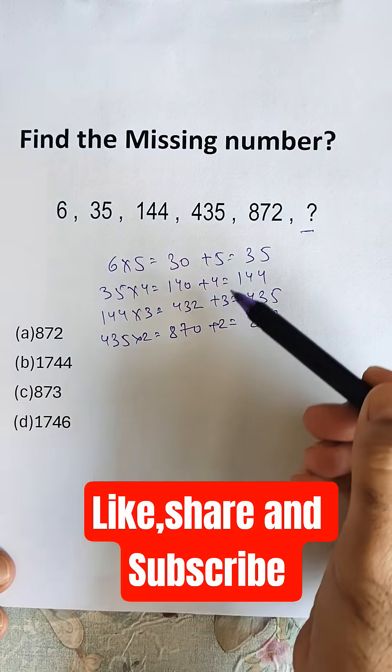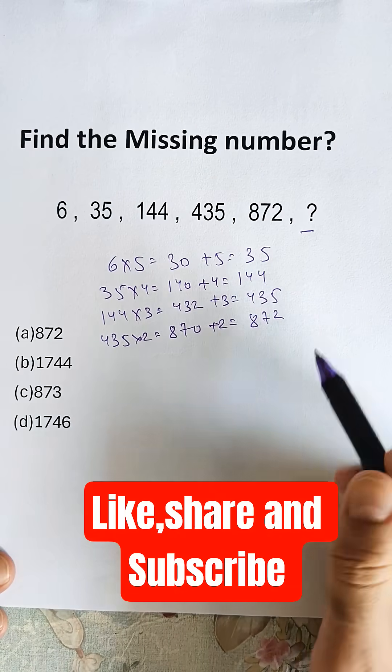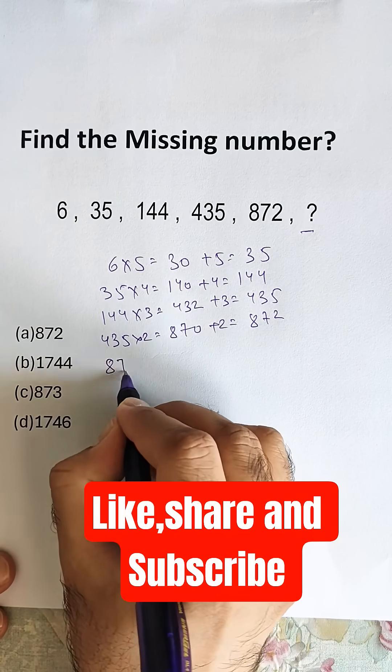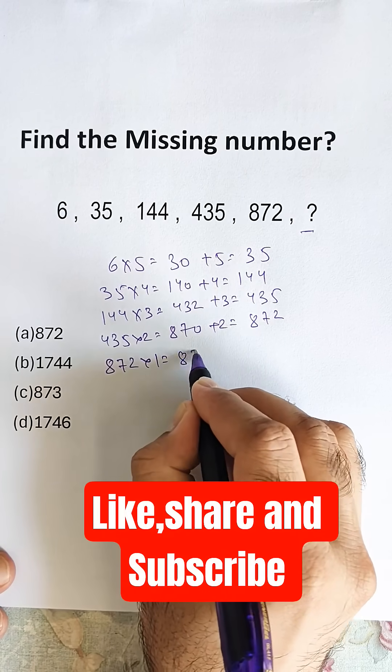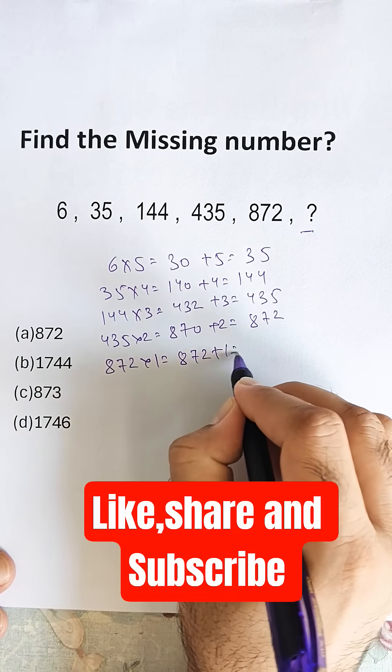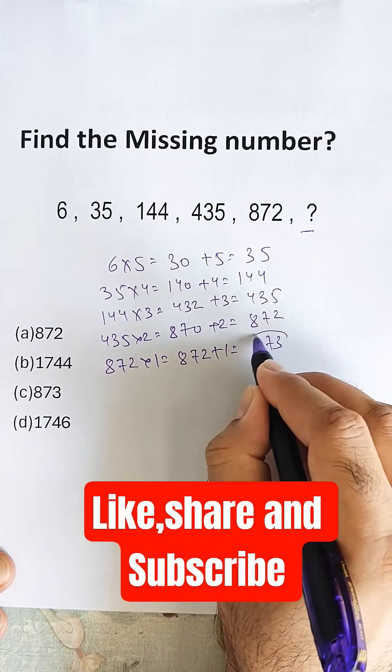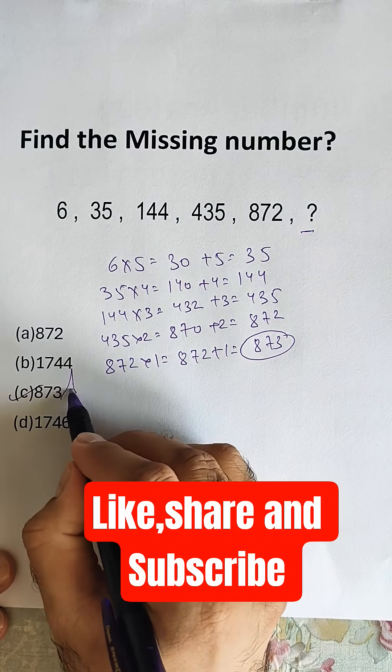Here there is a decrease of 1, also here there is a decrease of 1. So next will be 872 into 1, that is 872, and adding 1 is 873. Option C is the correct answer.